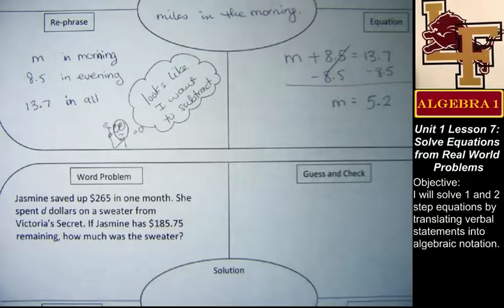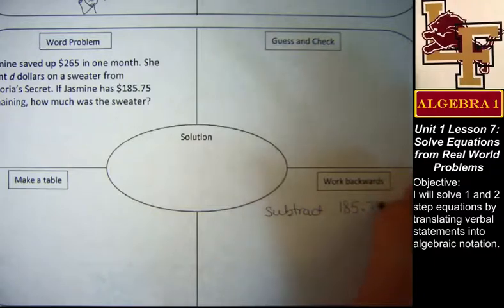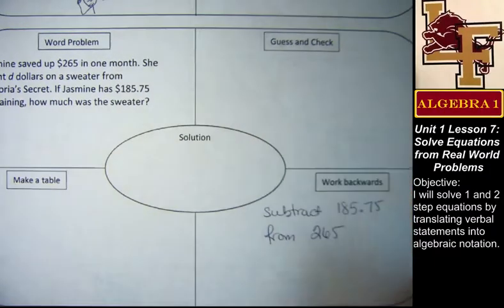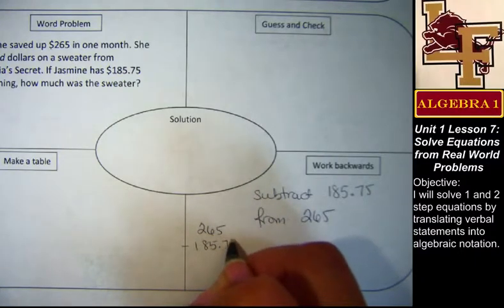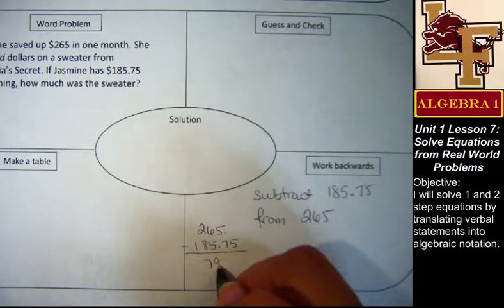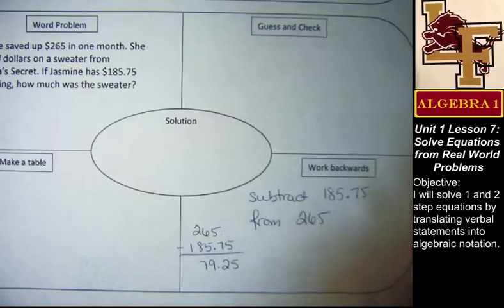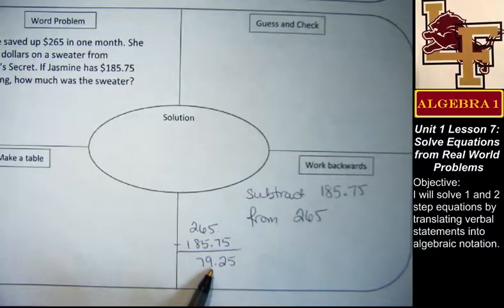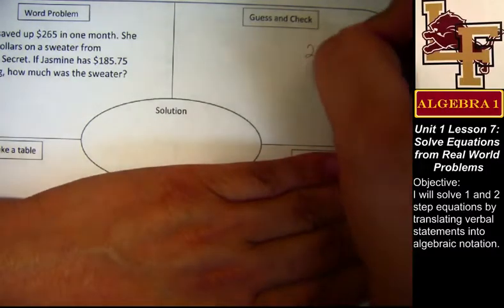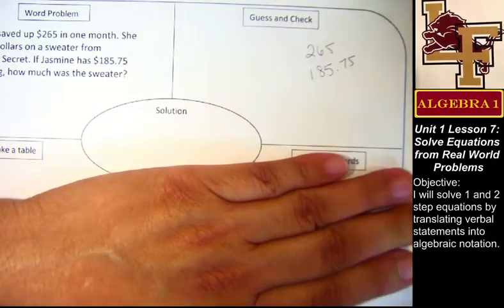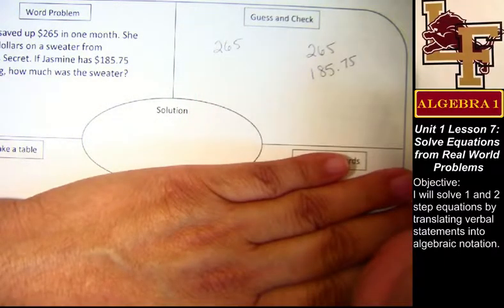Yeah, it totally feels like we should just subtract. So I'm gonna come here to the work backwards. So it feels like we should just subtract whatever she had left from whatever she had walked into the store with. So that's gonna end up looking something like that. $79.25 is what she tells me. I'm assuming there was taxes in there.